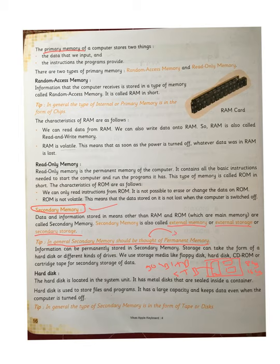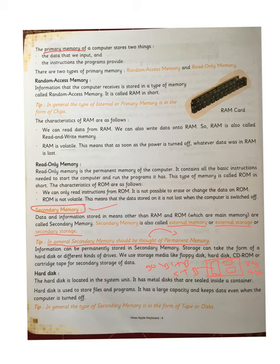It is not actually permanent memory but it is thought of as permanent memory. Information can be permanently stored in the secondary memory. Storage can take the form of a hard disk or different kinds of drives. We use storage media like floppy disk, hard disk, CD-ROM, or cartridge tape for secondary storage. Examples include hard disk, floppy, CDs, DVDs, and pen drives.